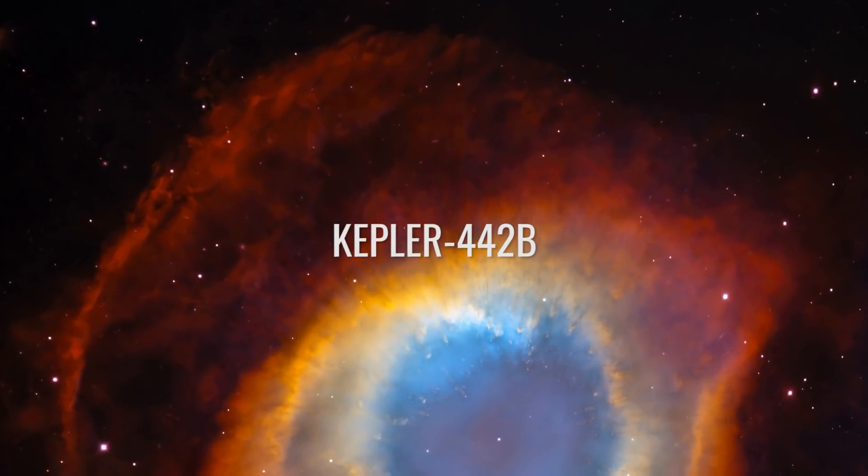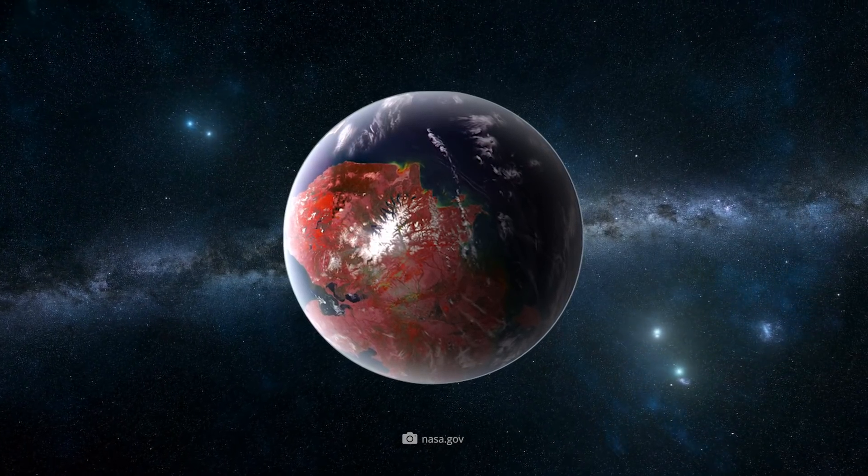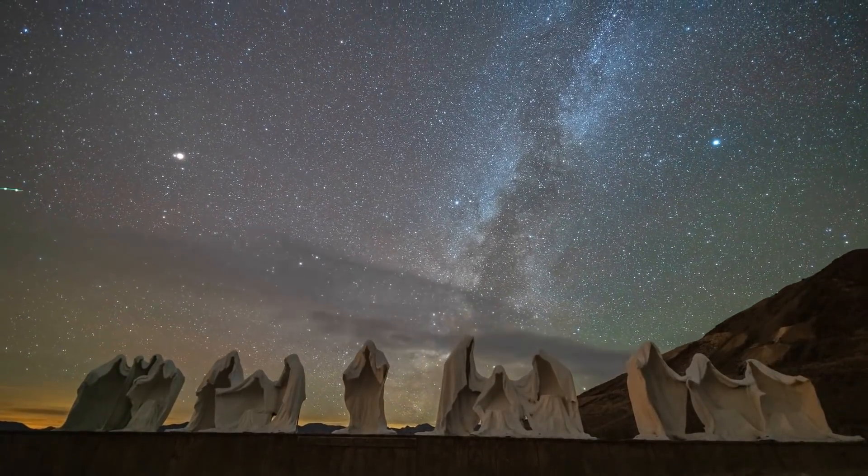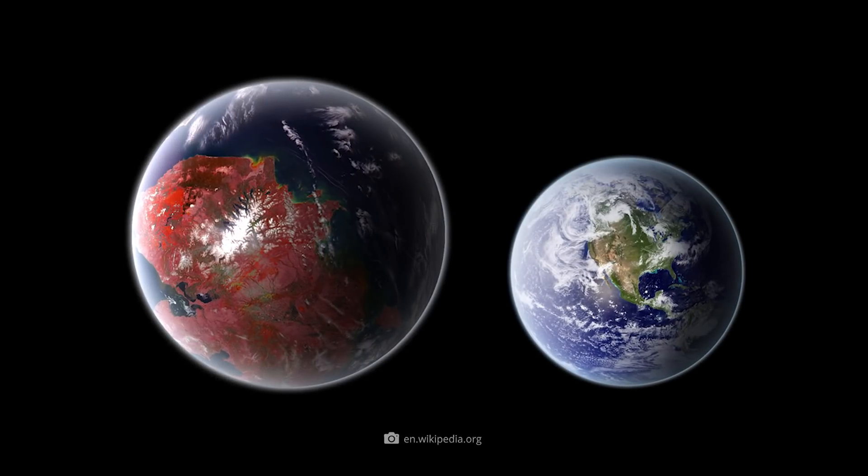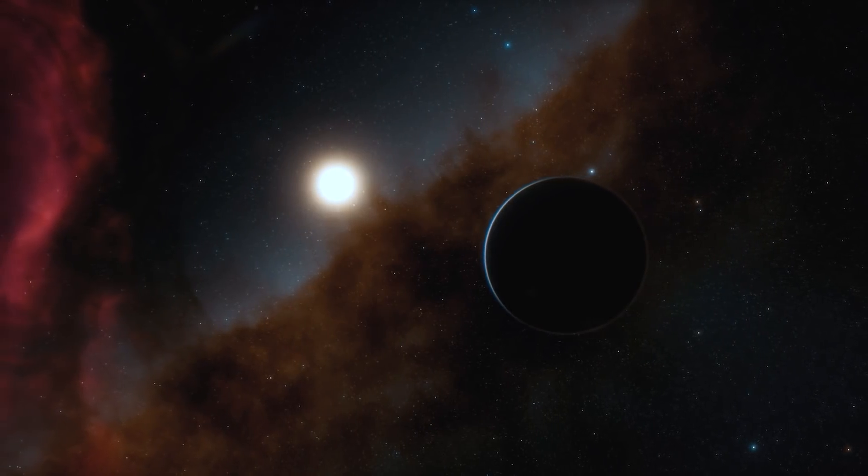Kepler-442b. The planet Kepler-442b, 1,200 light-years away, was discovered in 2015 and subsequently observed intensively. Kepler-442b is about 33% larger than Earth and is at an optimal distance from its star.